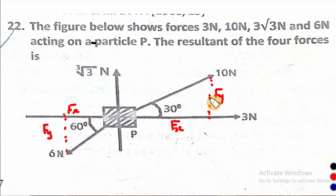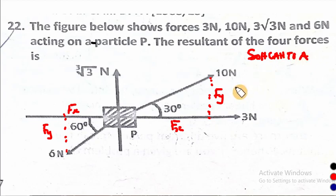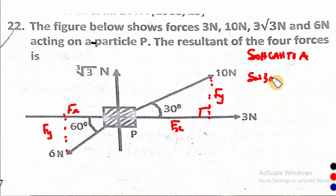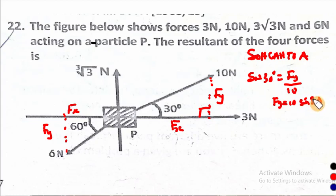Finding Fy here. So, what will Fy be? We say, using SOH-CAH-TOA — opposite over hypotenuse. Remember, this is the hypotenuse, this is angle 90 degrees, and your side facing 90 degrees is the hypotenuse. So we have opposite over hypotenuse, and that is sine. Sine 30 degrees equals Fy over hypotenuse 10. So Fy will be 10 sine 30. Sine 30 is a half, so Fy will be 10 times half, which is 5 newtons.